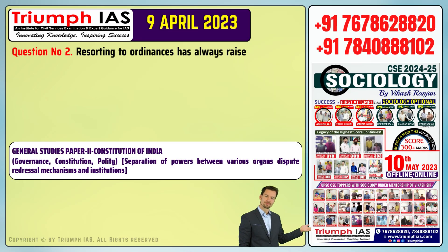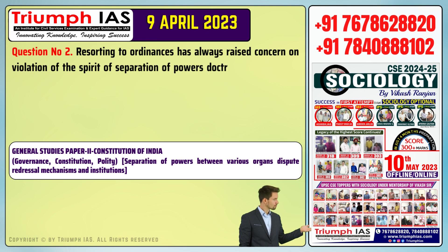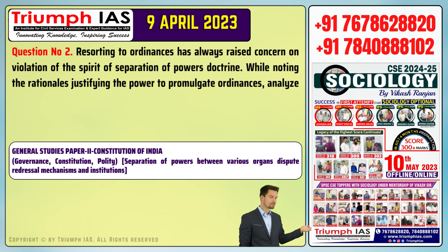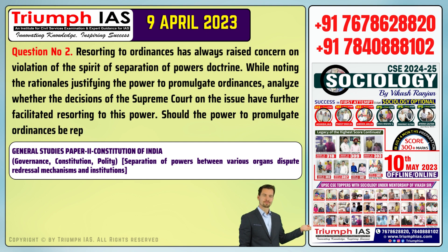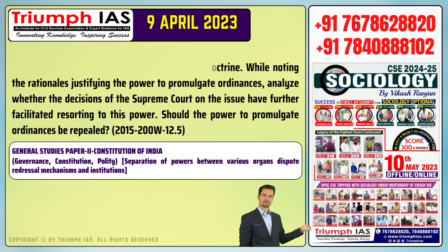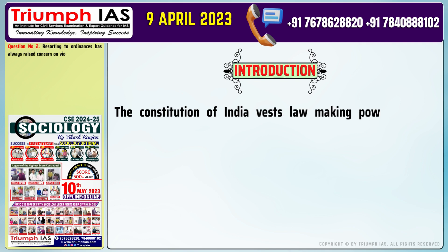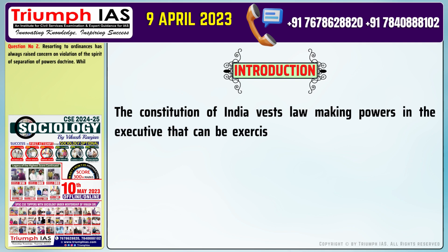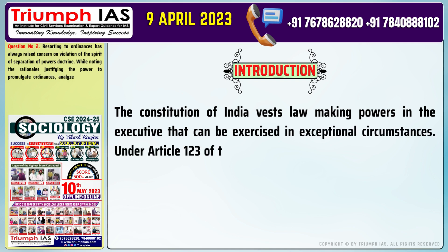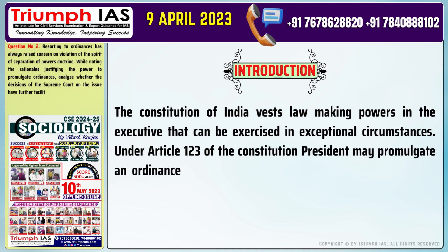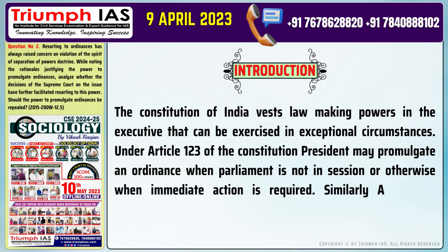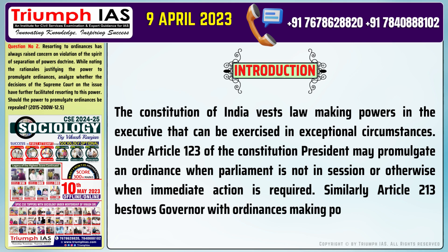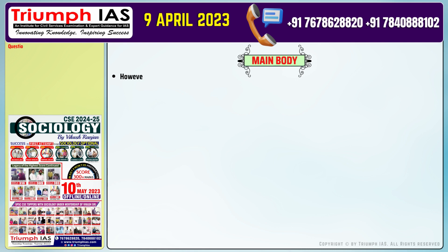Question number two: Resorting to ordinances has always raised concern on violation of the spirit of the separation of powers doctrine. While noting the rationales justifying the power to promulgate ordinances, analyze whether the decisions of the Supreme Court have further facilitated resorting to this power. Should the power to promulgate ordinances be repealed? For the introduction: The Constitution of India vests lawmaking powers in the executive that can be exercised in exceptional circumstances. Under Article 123, the President may promulgate an ordinance when Parliament is not in session or when immediate action is required. Similarly, Article 213 bestows the Governor with ordinance-making powers.